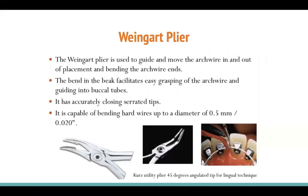The wire guide plier — also called the wine guard plier — is a very important plier used every day. It is used to guide and move the arch wire in and out of placement and for bending arch wire ends. The bend in the beak facilitates easy grasping of the arch wire and guiding it into the buccal tube. It has a serrated closing tip, is capable of bending hard wire up to 0.5mm diameter, and I recommend getting the tungsten carbide tip version with serration and some angle.